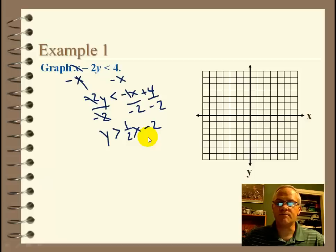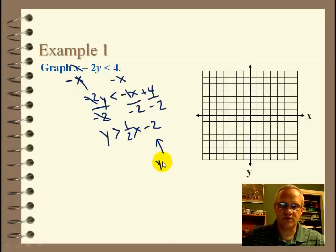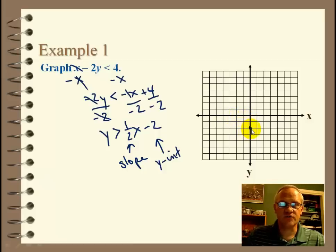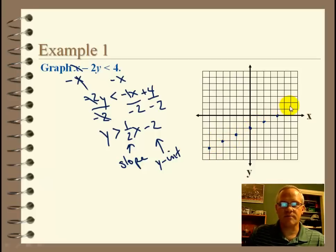Now we have it in y equals mx plus b form. We begin with b, the y-intercept, which is negative 2. So I go to my graph down to negative 2 and put a dot — that's the y-intercept. Then one-half is the slope m, which tells me how to move. From the dot I move up 1 and 2 to the right for another dot, or down 1 and 2 to the left. That's our line, or the boundary.